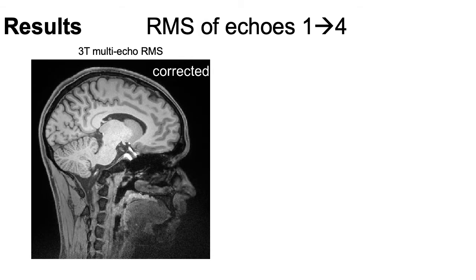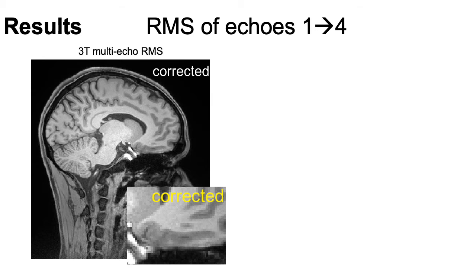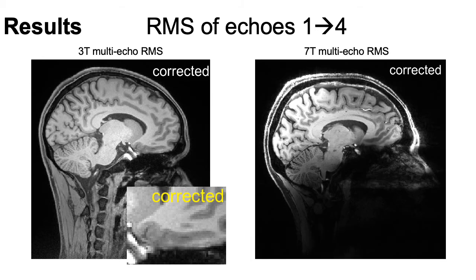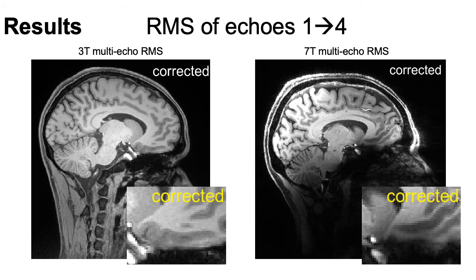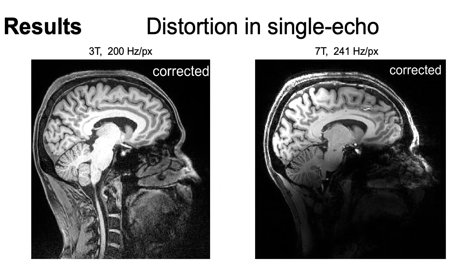Usually we take the root mean square of these echoes and use that as the final image. At 3T there is not much difference between the original and the distortion-corrected RMS. At 7T there is similarly only a small improvement in sharpness in the highly distorted regions. However, with single echo data we can reduce the effects of distortion with this approach both at 3T and at 7T.